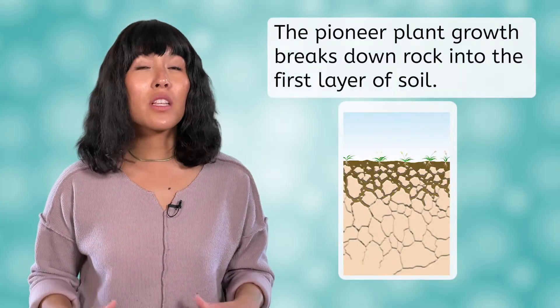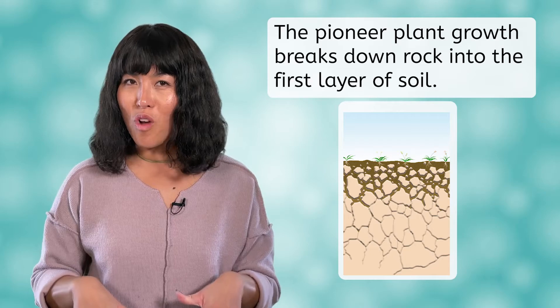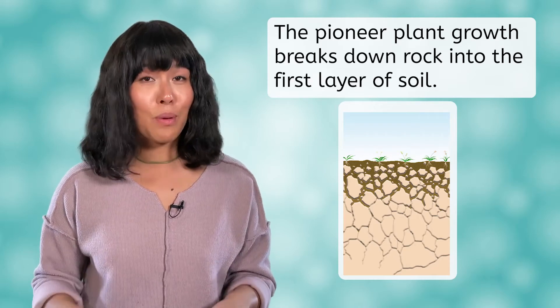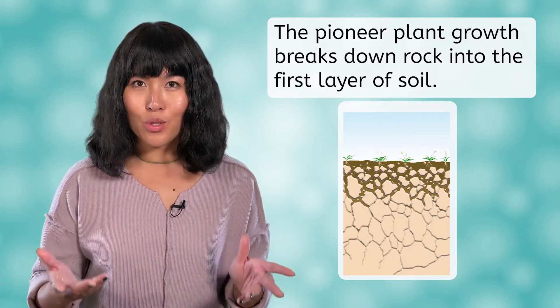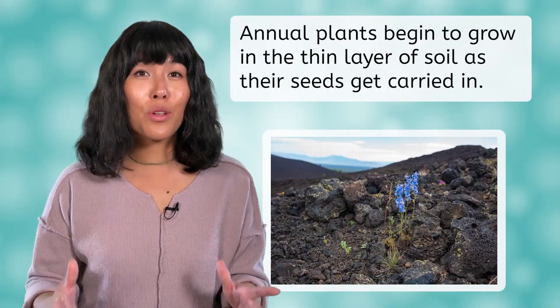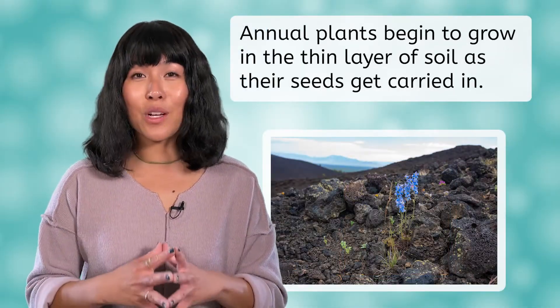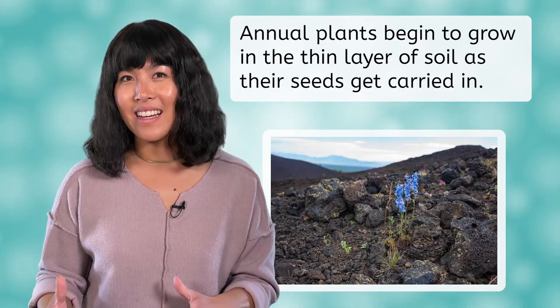As the pioneer species take root, their growth slowly begins to make cracks in the underlying rock, breaking it down into pieces that will form the first layer of soil. At this point, there may be enough soil for small annual plants to take root, as their seeds get carried in.